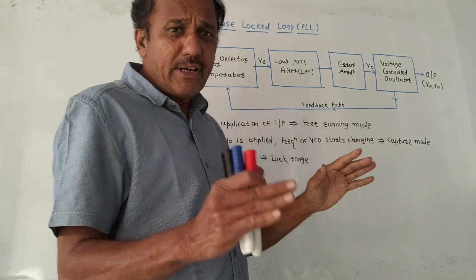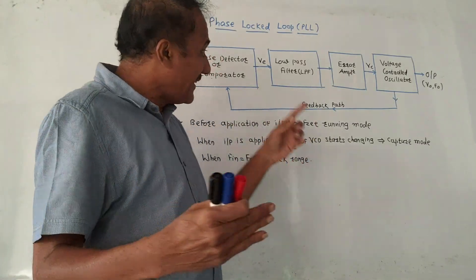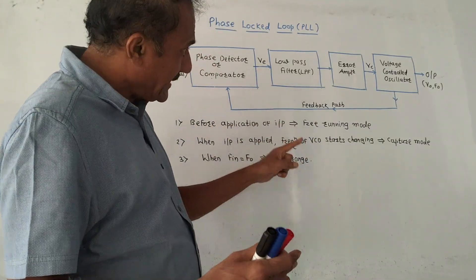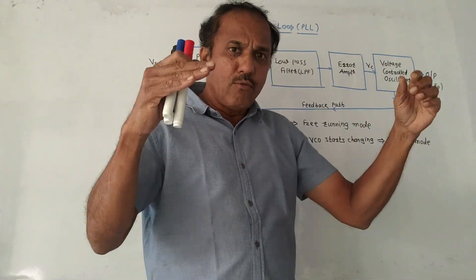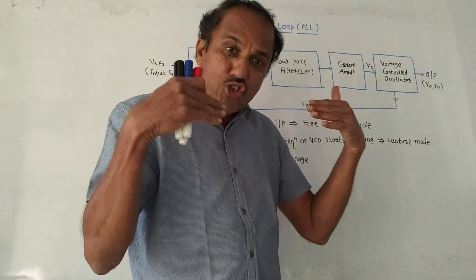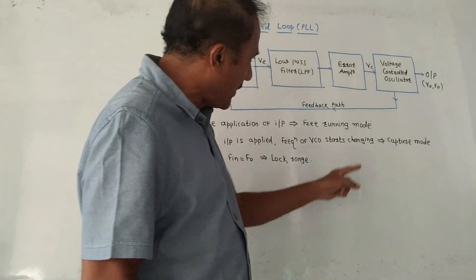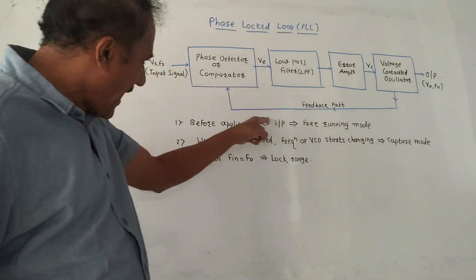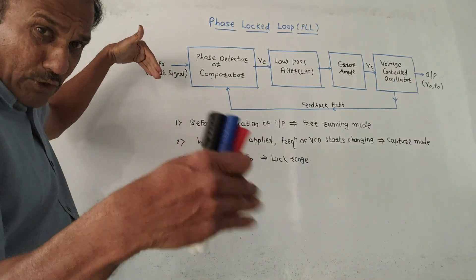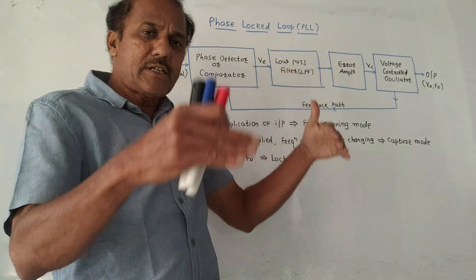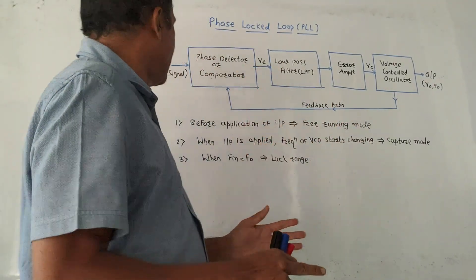Initially, whenever an input signal is not applied — that means input frequency is zero — the VCO, that is voltage controlled oscillator, will oscillate with its natural frequency, which is the natural frequency of oscillation, and this is taken as the feedback. This particular condition is called the free running mode of PLL.